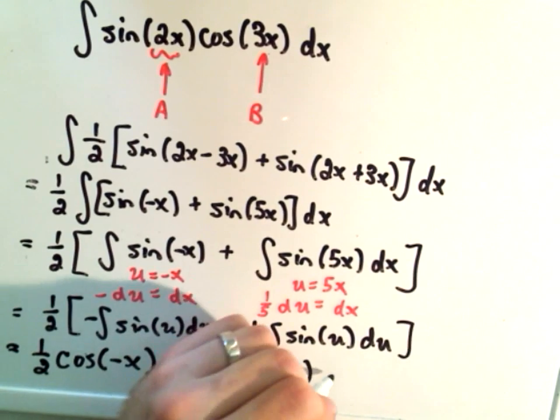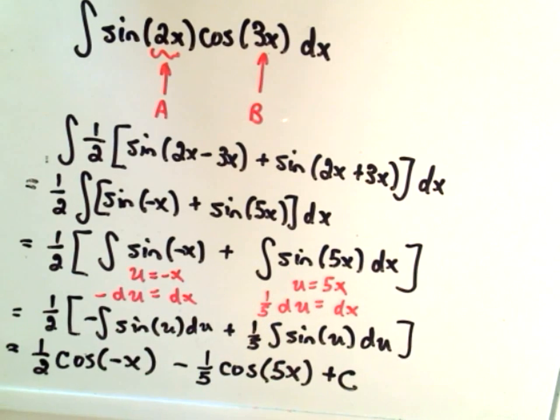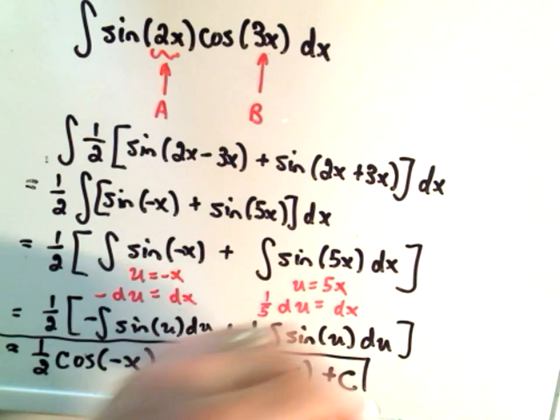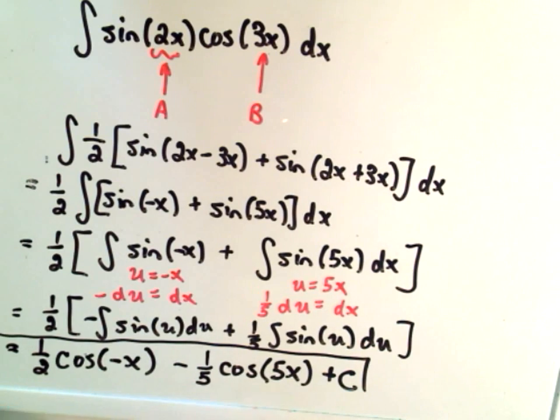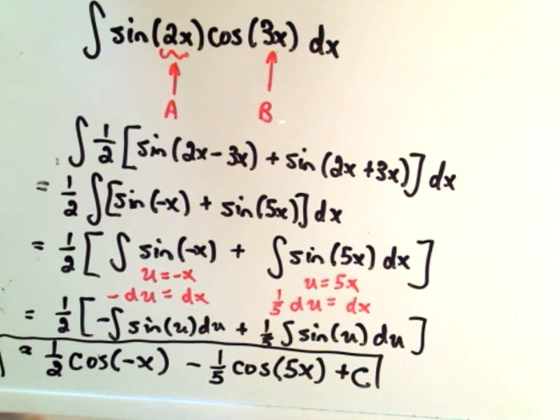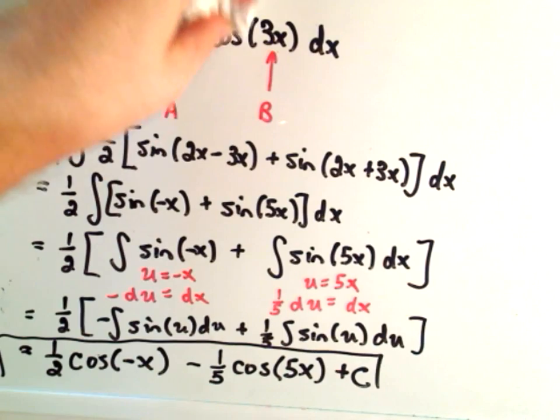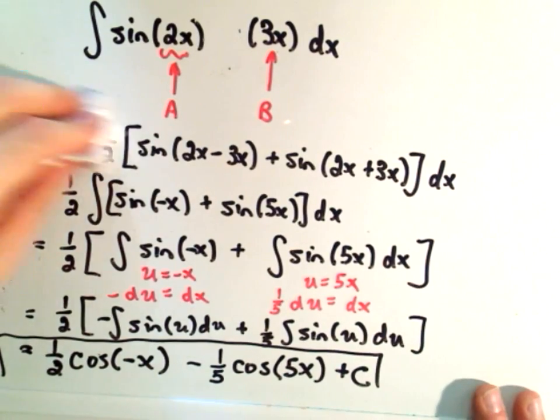cosine of u, which for that guy was my 5x term, plus c, and that will simply be my anti-derivative in that case. So it's just basically using the appropriate formulas and u-substitution. Let's do one more since we've got time to do it here.